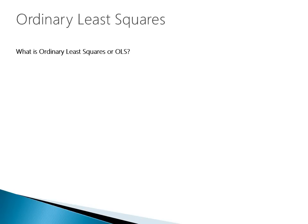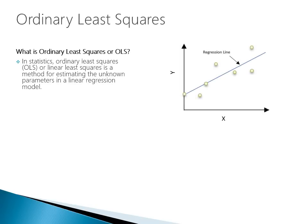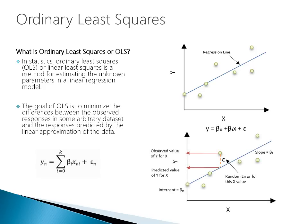What is ordinary least squares, or OLS? In statistics, OLS is a method for estimating the unknown parameters in a linear regression model. The goal of OLS is to minimize the differences between the observed responses in a dataset and the responses predicted by the linear approximation of the data. If we produce a straight line to fit the data points, not all points lie cleanly on the line — the distance between the line and each point is the error term, and OLS finds the line that minimizes those errors.